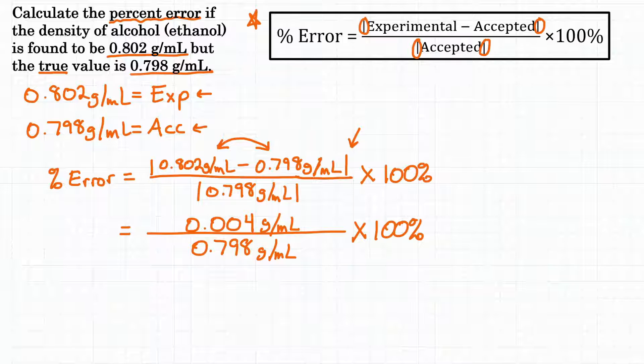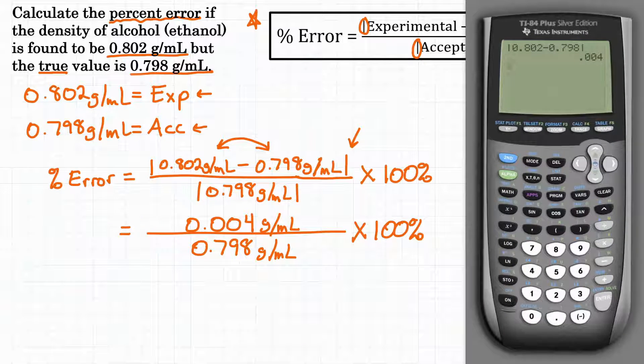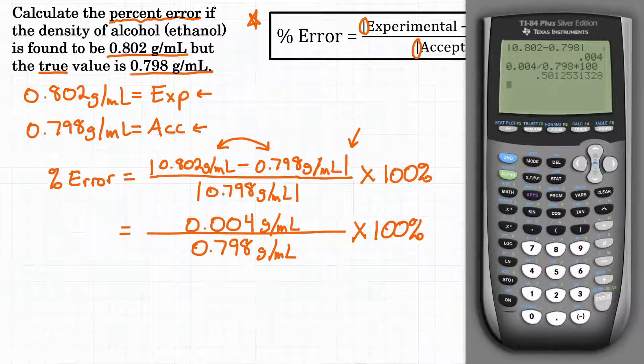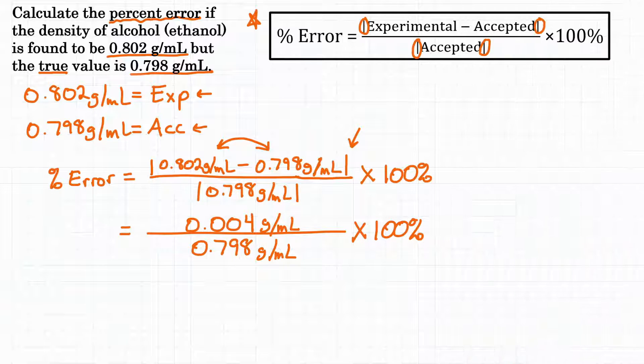So now let's get our calculator and solve. On top of our fraction we have 0.004, we're going to divide by 0.798 and then multiply all of that by 100. Hit enter and we get 0.50125 with some extra digits past that. Let's just round to one significant figure for 0.5.